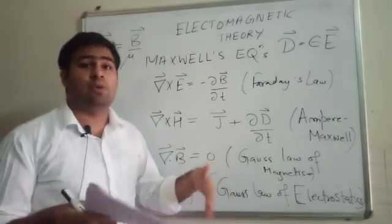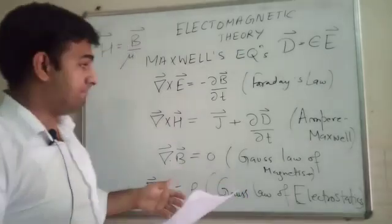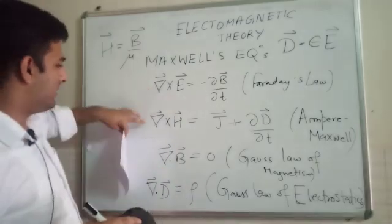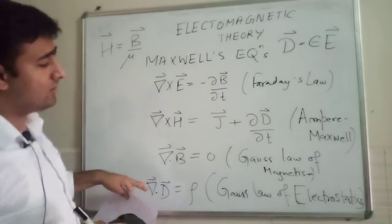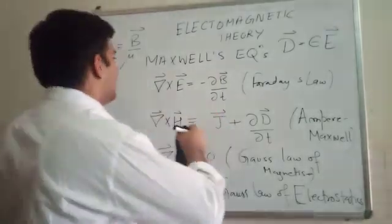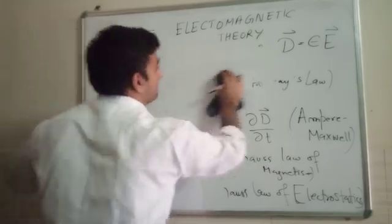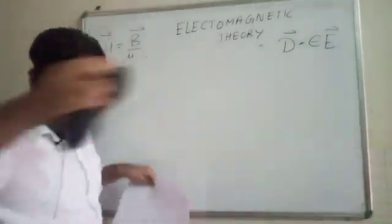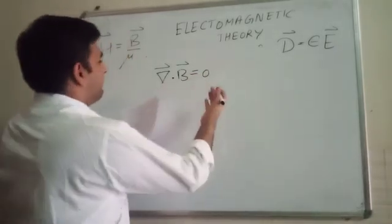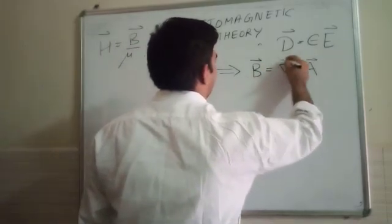We will now use Maxwell's equations and convert them into potentials, using the magnetic vector potential A and the scalar potential V. Currently there are twelve equations in total — three components from each of the four Maxwell's equations. We will reduce the number of equations by introducing the concept of potential. Since the divergence of B is zero, this implies that B is the curl of some vector A, where A is the magnetic vector potential.